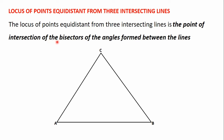The locus of points equidistant from three intersecting lines is the point of intersection of the bisectors of the angles formed between the lines. So here, the locus of points equidistant from the line AB, the line AC, and the line BC will be the point of intersection of the bisectors of the angles formed between the three lines. The line AB and AC meet to form the angle at point A; the line AB and BC meet to form the angle at point B; and the line AC and BC meet to form the angle at point C.